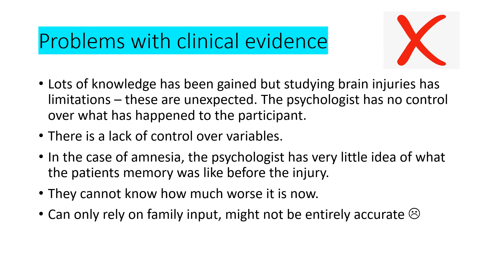A limitation is the problems with clinical evidence. We've gained a vast amount of knowledge from studying patients with brain injuries, but it comes with many limitations because the brain injuries themselves are unexpected. The psychologist has no control over what happened to the patient prior to seeing them — there is a lack of control over variables. In the case of amnesia, the psychologist has very little idea of what the patient's memory was like prior to the injury, so they cannot know how much worse it is now than previously. They have to rely on family input through interviews, which might not be entirely accurate.